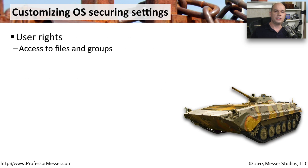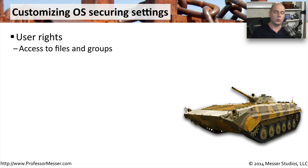Let's categorize what some of these security settings might be. User rights allow us to change what a user may have access to inside of the system. They might have access to certain kinds of files, and that access might be read-only, or we may allow read and write access. This usually includes setting up groups of users so we can create logical groupings.